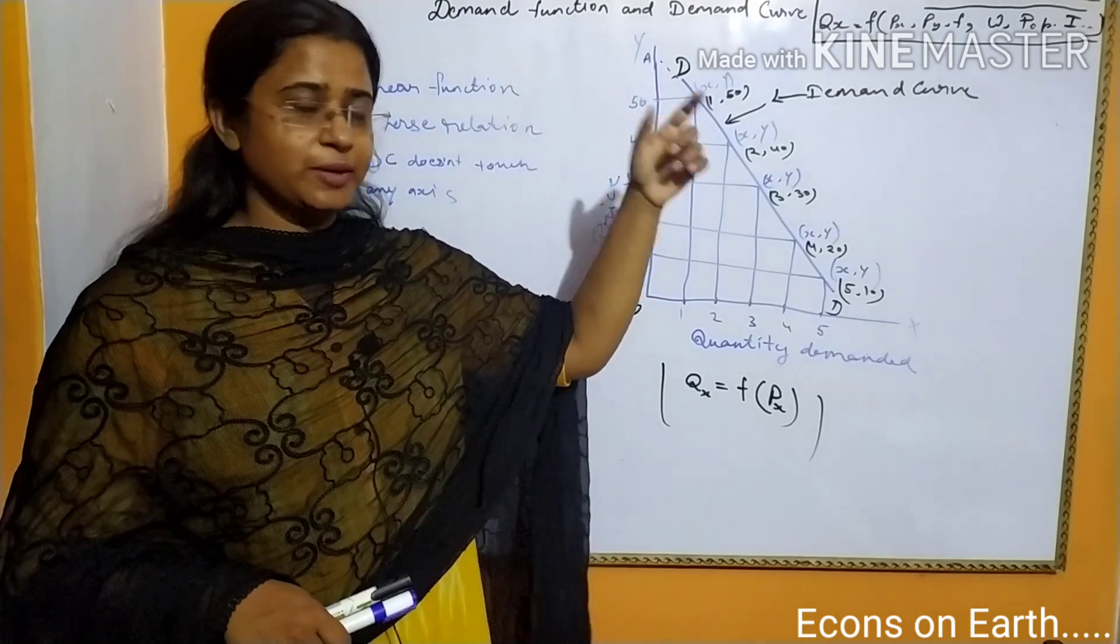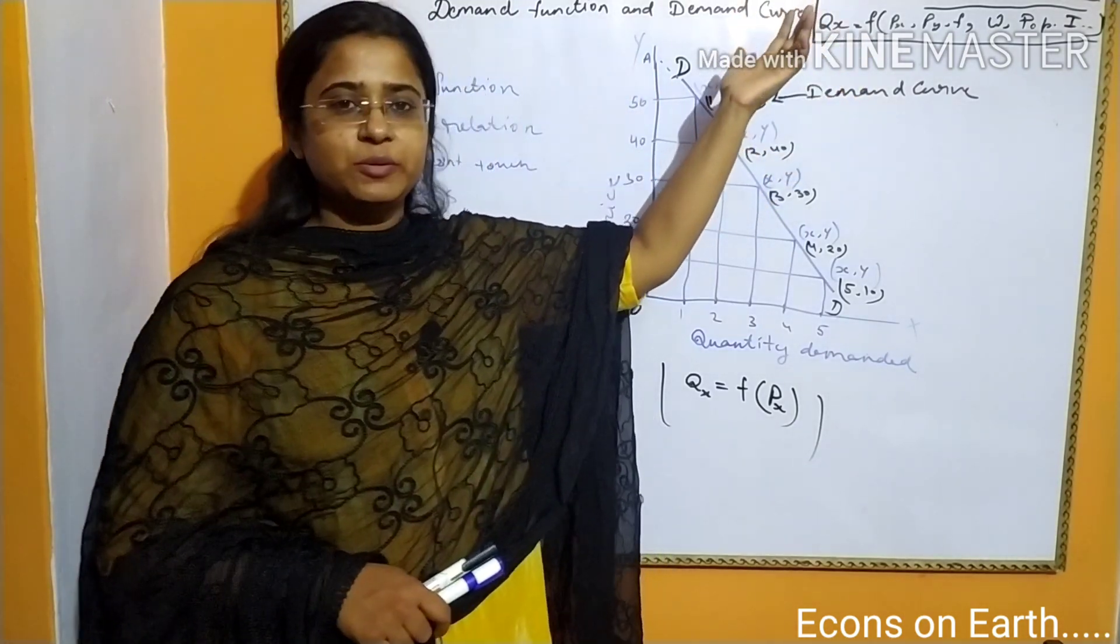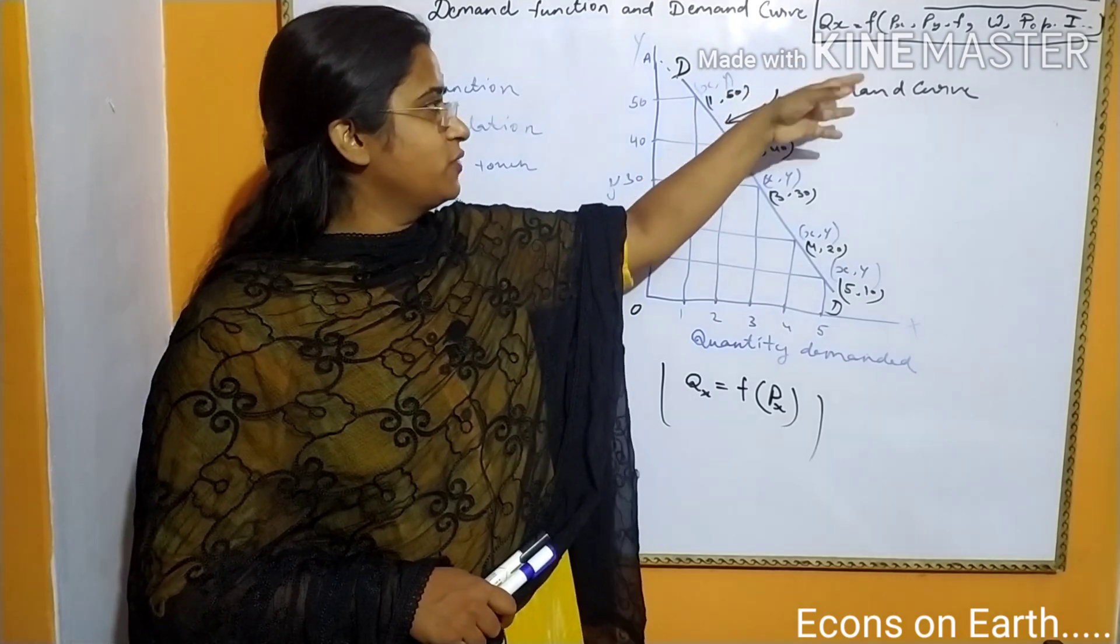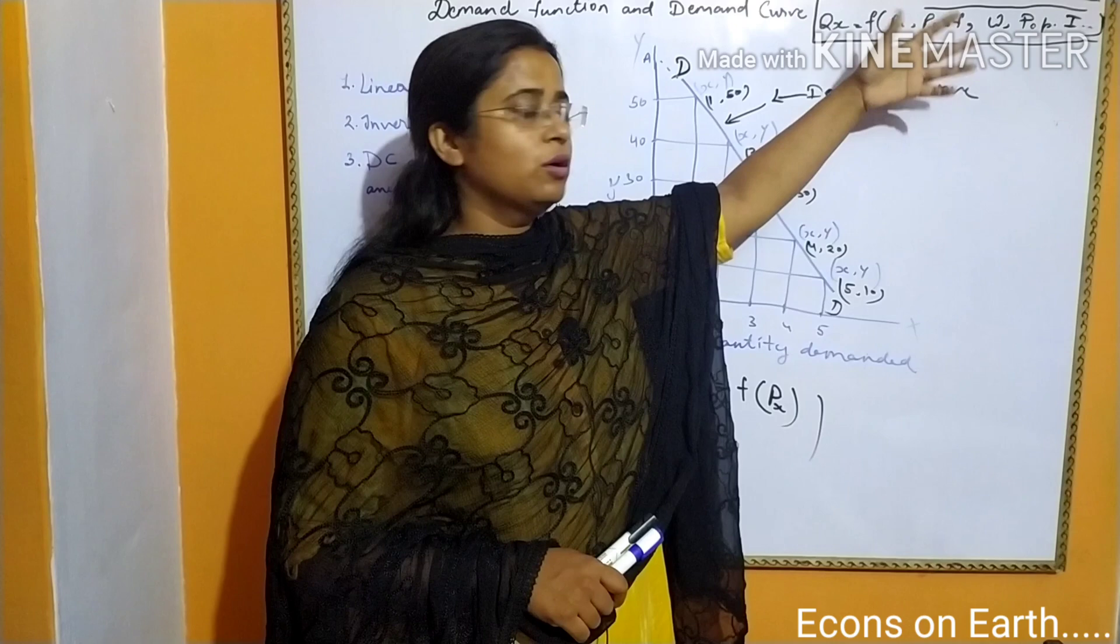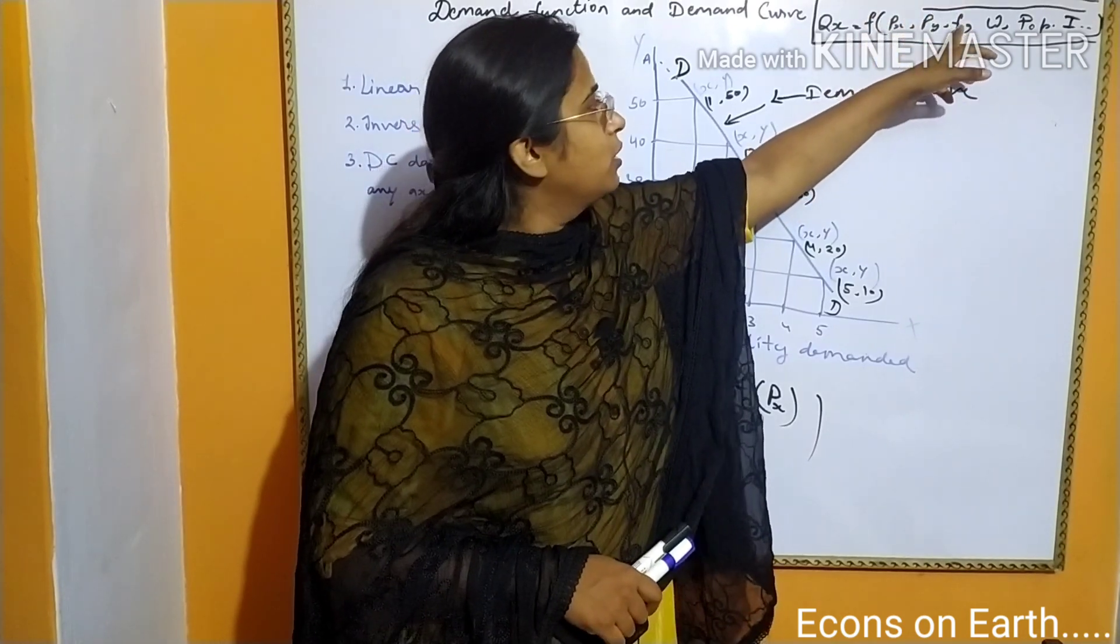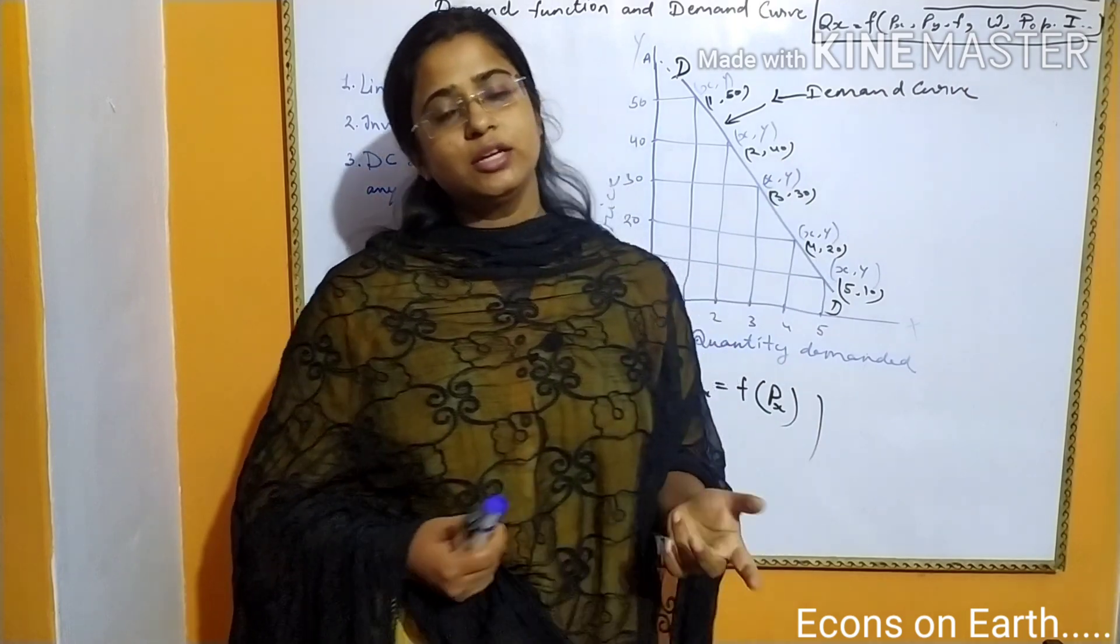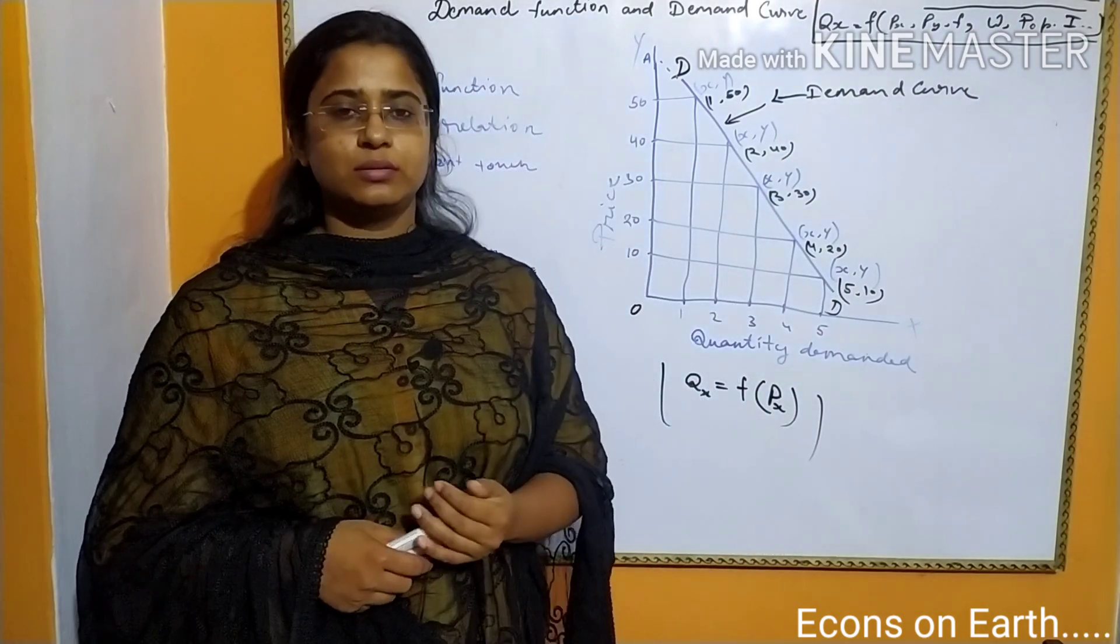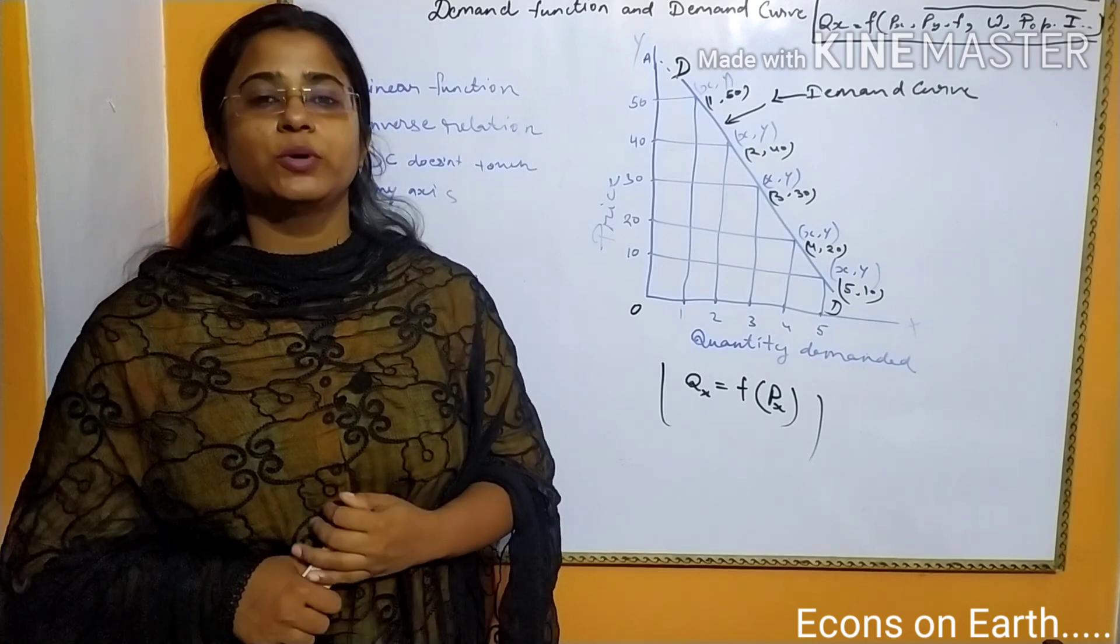We can see the demand function here. QX is the quantity demanded which is the function of price of X, price of Y or other goods, fashion, weather, population, and income of the individual who is going to make the demand for commodity X.